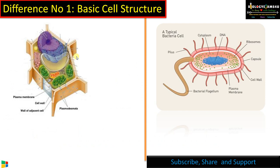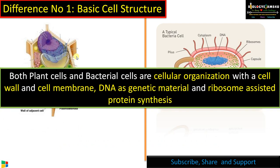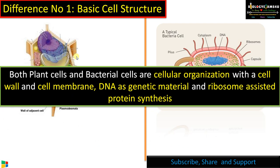Let's begin with the similarities of plant cell and bacterial cell. Both plant cell and bacterial cell have a cellular organization with a cell wall and a cell membrane. DNA is the genetic material in both, and protein synthesis occurs with the help of ribosomes.